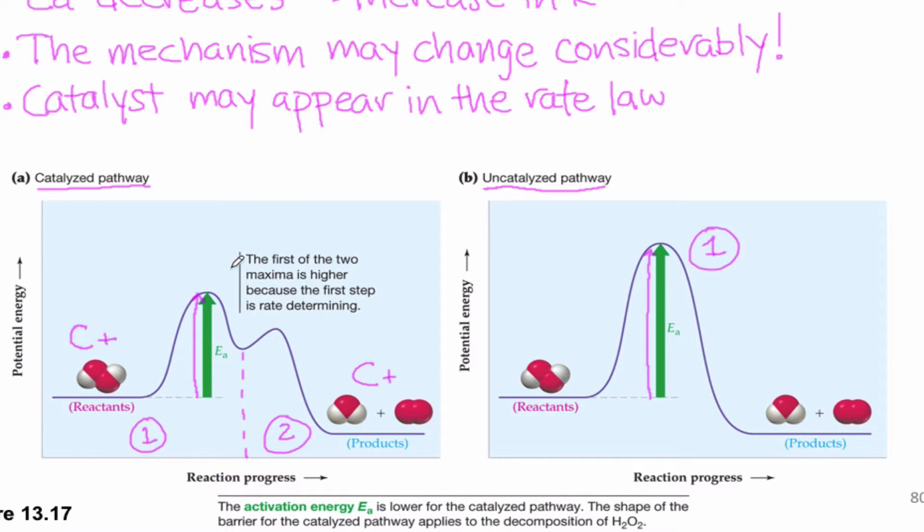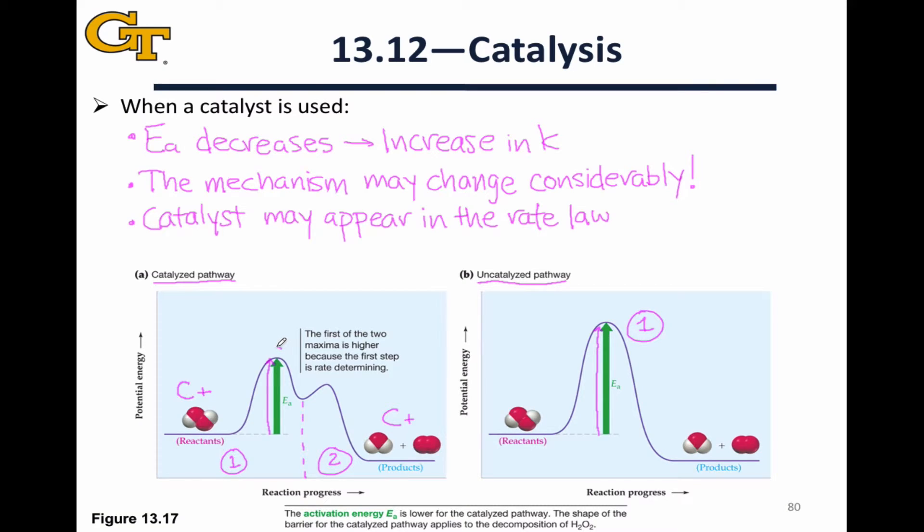Very often the catalyst does appear in the rate law because the rate-determining transition state, the transition state for that slow step, typically is stabilized or lowered in energy by the catalyst. This is the mechanistic basis of the catalyst speeding up the reaction.